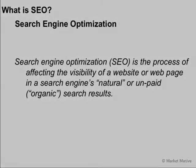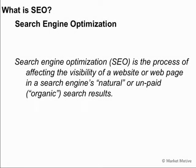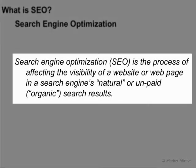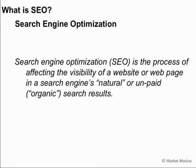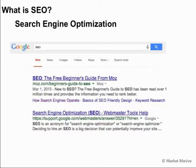So what is search engine optimization? It's the process of affecting your website or web page to impact the visibility in the search engine's natural or unpaid organic search results. If you do a search for something like SEO, you'll get some results here, and they'll tell you various things about search engine optimization.